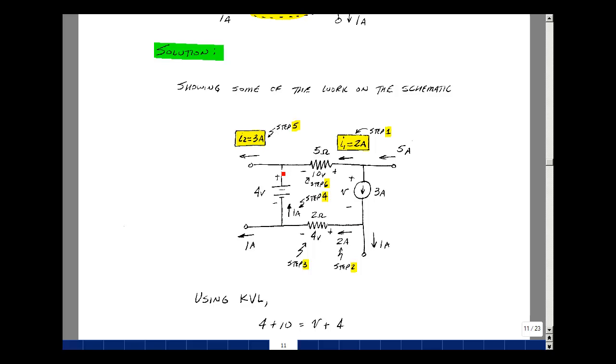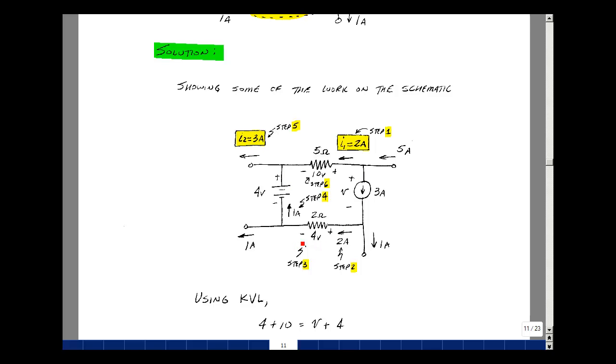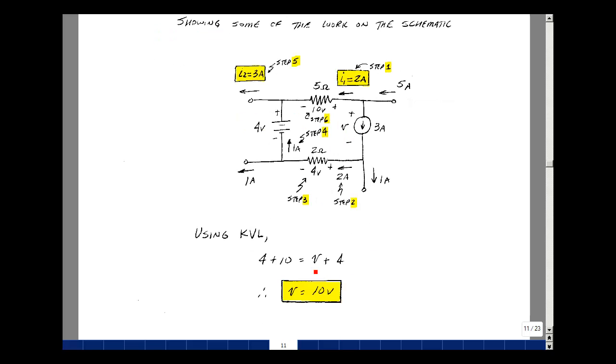So I have a rise in voltage of 4, a rise in voltage of 10, a drop of V, and a drop of 4. And that's the equation shown below. So now I can solve for V. The 4's cancel and I got V is equal to 10.